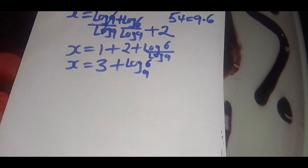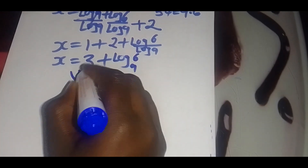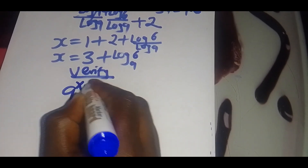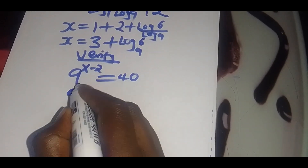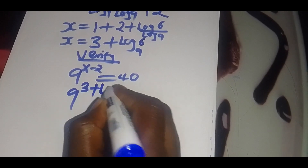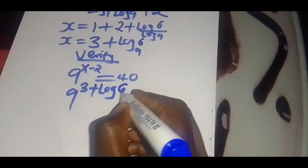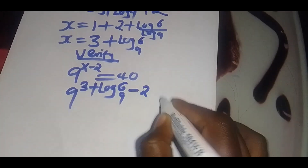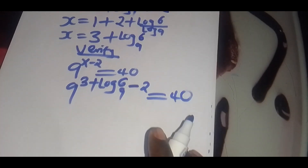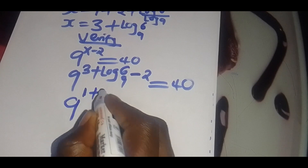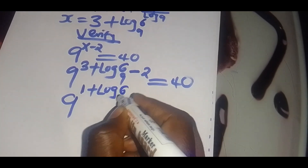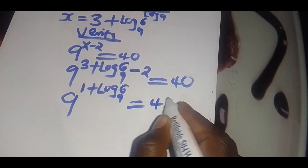So that is the value of x. Let's verify: we'll have 9 to the power x minus 2, which is supposed to give us 54. Substituting, we have 9 to the power of 3 plus log 6 to base 9, subtract 2. This gives 9 to the power of 1 plus log 6 to base 9, which is essentially going to give us 54.